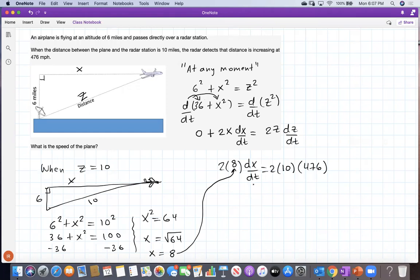And basically, I have everything except for dx/dt, which is precisely what I need to find. So dividing both sides of this equation by 2 times 8, what I get is: dx/dt equals 2 times 10 times 476, all over 2 times 8. Let's compute it.